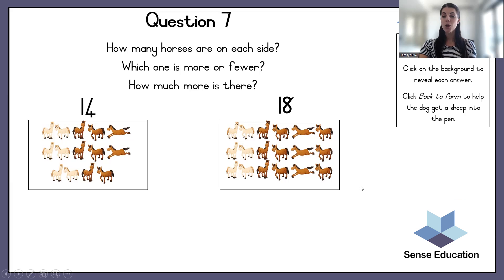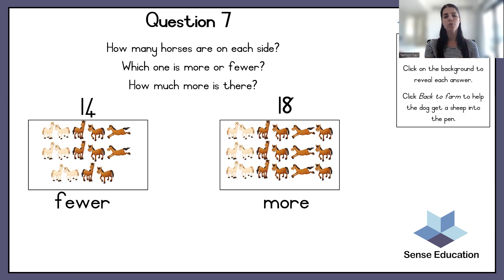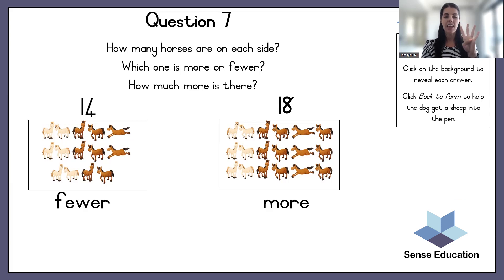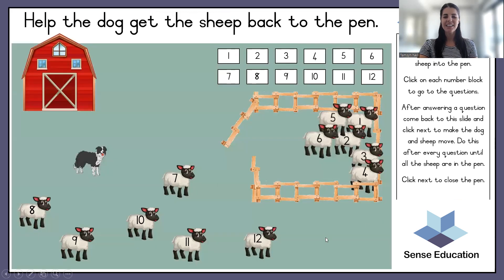Which one is more or fewer? Eighteen is more and fourteen is fewer. How much more is there? You can either do 18 minus 14, or count on from fourteen: fifteen, sixteen, seventeen, eighteen — four fingers up. That means there are four more on this side. Good job, well done! Let's take sheep number seven back into the pen.